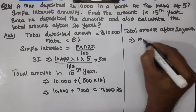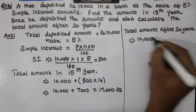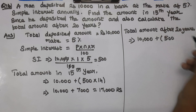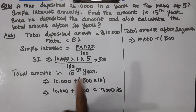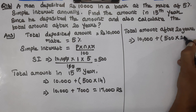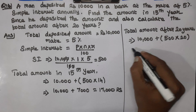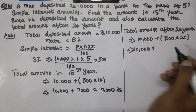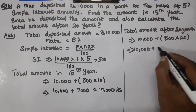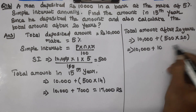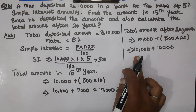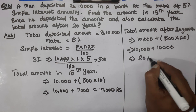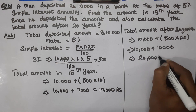So the total amount is 10,000 plus 500 rupees per year simple interest for 20 years. 500 into 20 is 10,000. So 10,000 plus 10,000 equals 20,000 rupees.